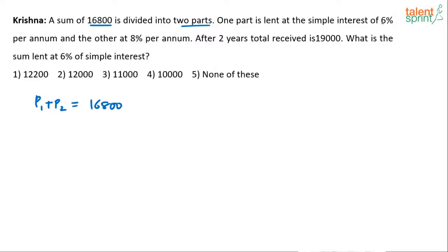One part is lent at 6% per annum. Let's assume P1 is lent at 6% per annum and the other part, P2, is lent at 8% per annum simple interest. We know the rates of interest on each principal amount.